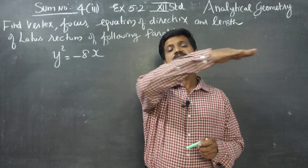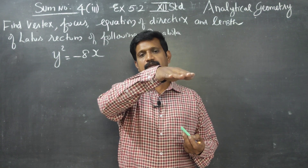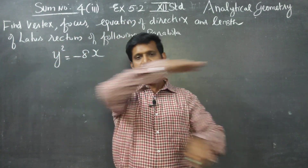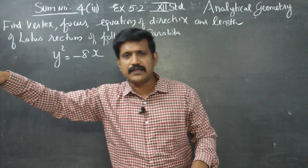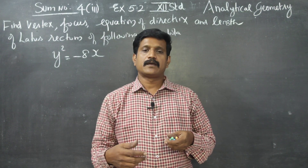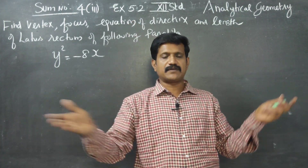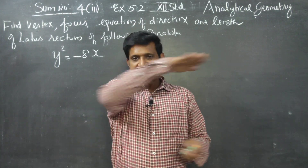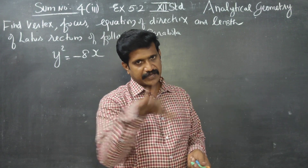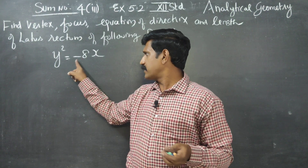The line of symmetry is the X axis. Therefore, the parabola will open either right or left. If the coefficient is positive, it opens right; if it is negative, it opens left. Since our coefficient is negative, the parabola opens to the left side.